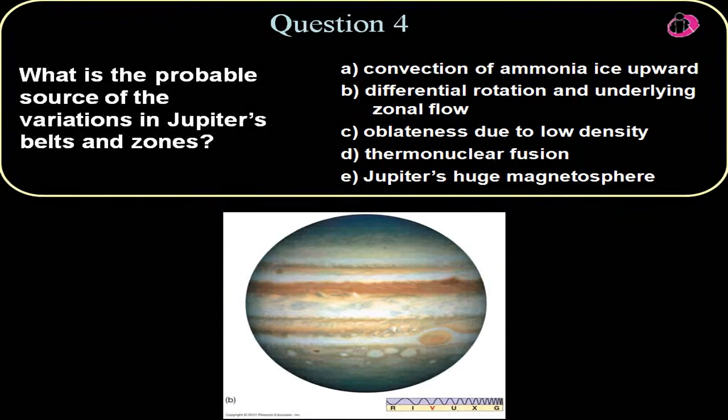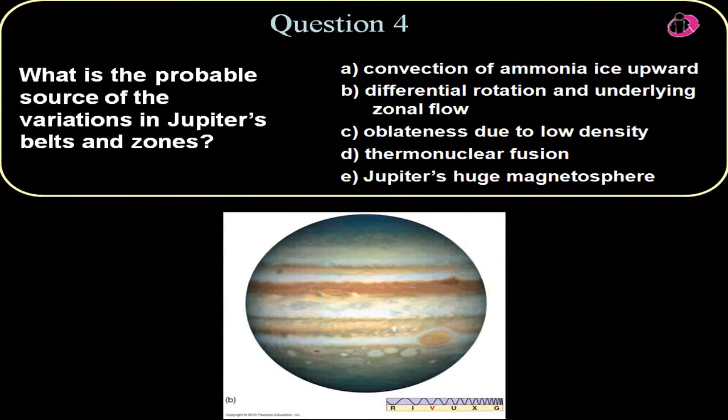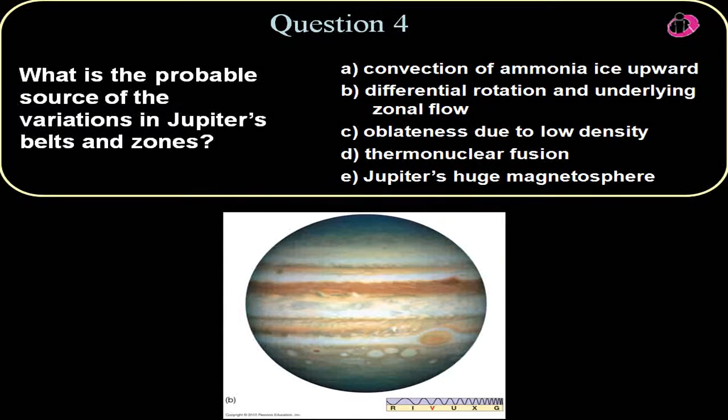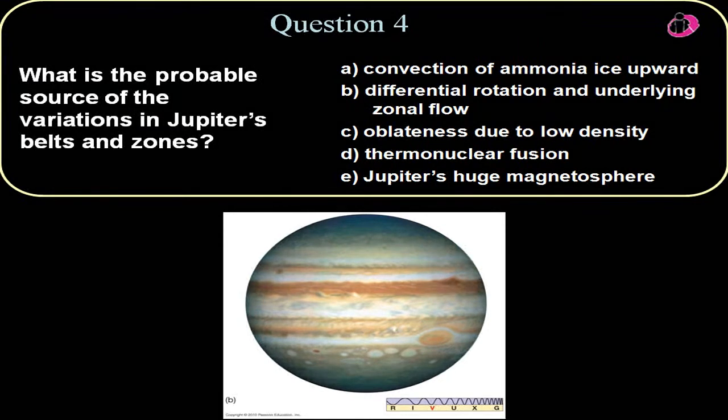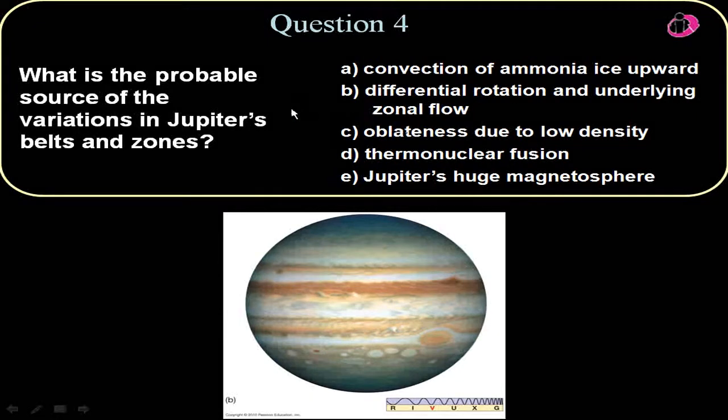Here's question number four. What is the probable source of the variations in Jupiter's belts and zones? Well, Jupiter has this rapid rotation causing very fast speeds associated with the gases. And there are undercurrents, convection currents as a result of that with the high speed and the difference in latitudes of this high speed causing a convection type action going on. So for Jupiter, you can see these bands as a definite result of differential rotation and the underlining zonal flow.